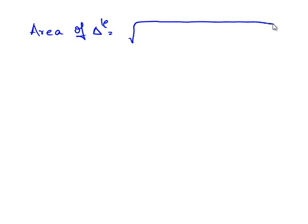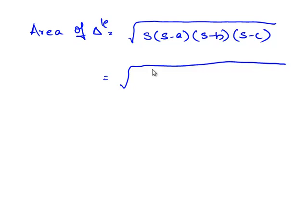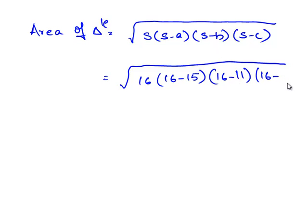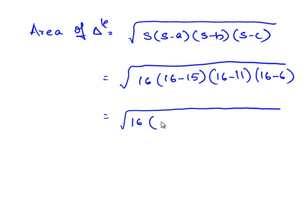Now we shall substitute the obtained values in the formula for the area of a triangle, that is, square root of S times (S minus A) times (S minus B) times (S minus C). That is, square root of 16 times (16 minus 15) times (16 minus 11) times (16 minus 6), which equals square root of 16 times 1 times 5 times 10.